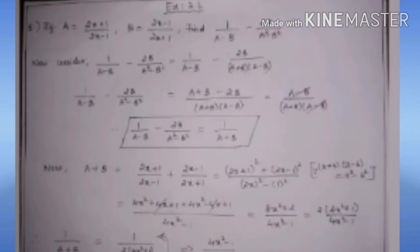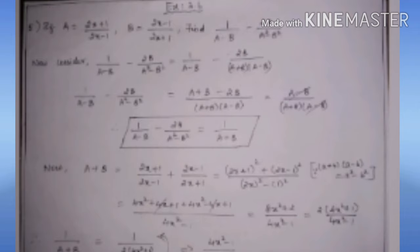Now we move to the exercise on operations of rational expressions. I have taken the 5th sum, which is a little different. A = (2X + 1)/(2X − 1) and B = (2X − 1)/(2X + 1). Find 1/(A − B) − 2B/(A² − B²). I write A² − B² as (A + B)(A − B). The denominator has (A − B) as common. Taking LCM and multiplying by (A + B), the numerator becomes A + B − 2B = A − B. The denominator also has A − B, so A − B cancels, giving 1/(A + B).